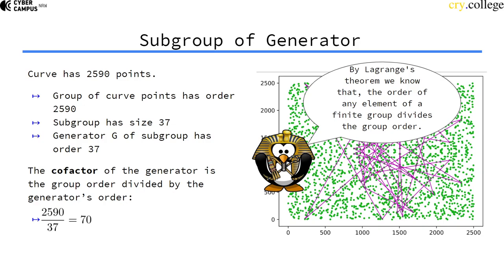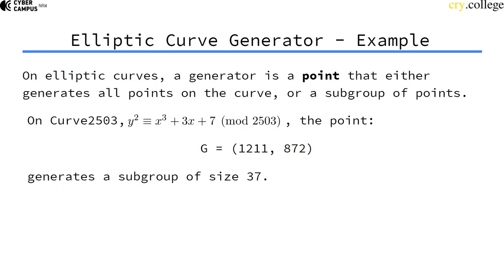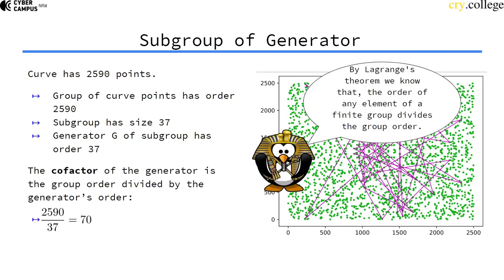So the cofactor of this generator, the generator was this point here, the cofactor of this generator is 70. So the cofactor of a generator is a kind of measure to tell you how many points this generator does not reach.